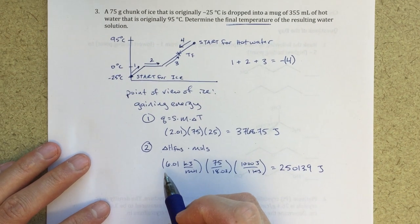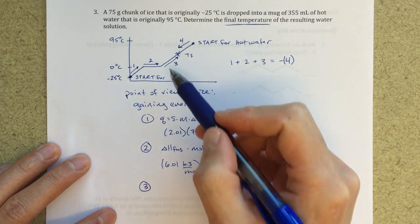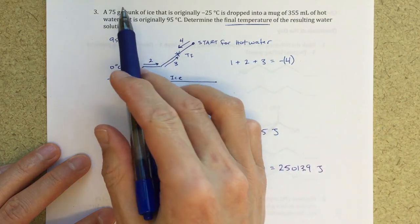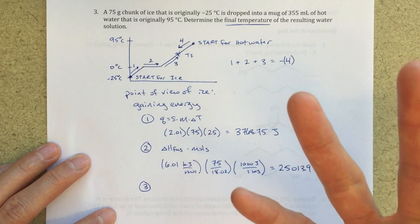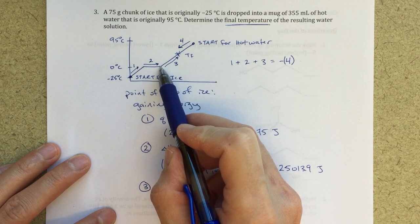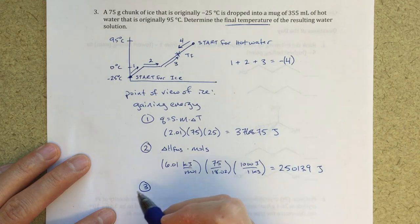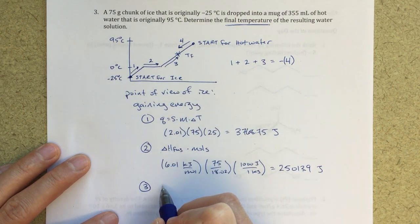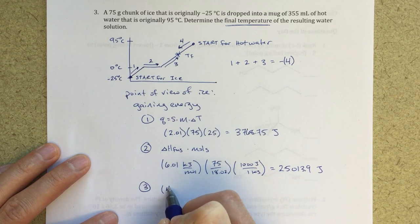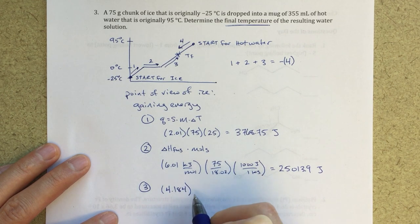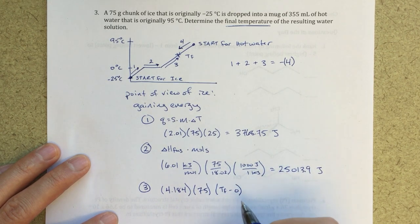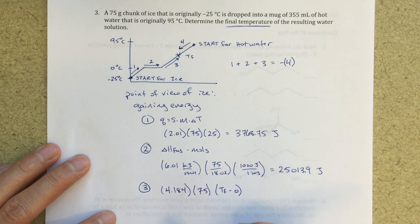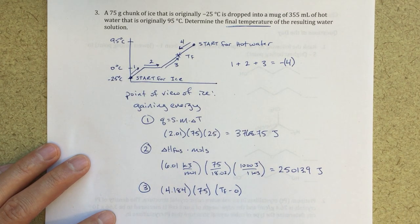In step three, I heat up that cold water. The 75-gram chunk of ice is now 75 grams of zero-degree water, and I want to heat it up to T_final. The expression is 4.184 J/(g·°C) × 75 g × (T_final − 0). I don't know T_final yet, but that's okay — we just have this one unknown.